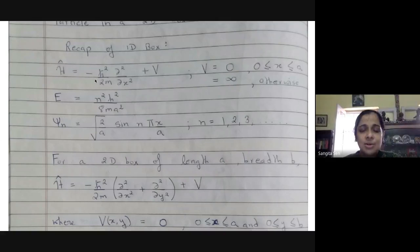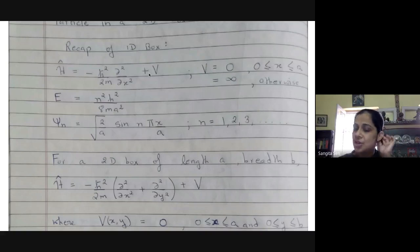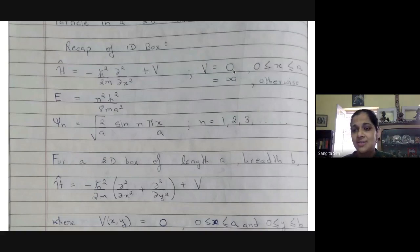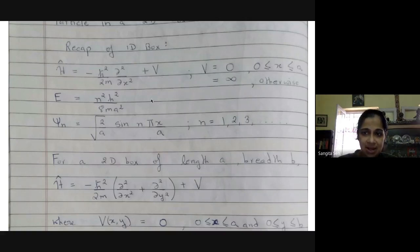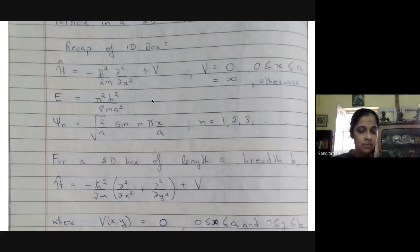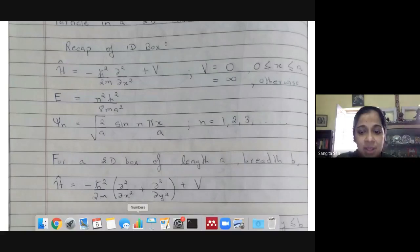The Hamiltonian has two terms: the kinetic energy term and the potential. This potential is zero when the particle is confined between zero and a, and it is otherwise infinity.